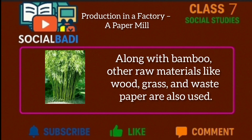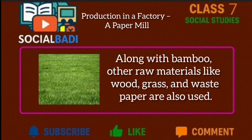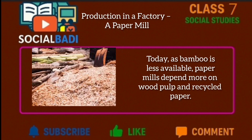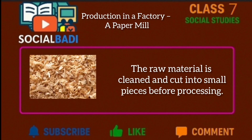Along with bamboo, other raw materials like wood, grass and waste paper are also used. Today, as bamboo is less available, paper mills depend more on wood pulp and recycled paper. The raw material is cleaned and cut into small pieces before processing.